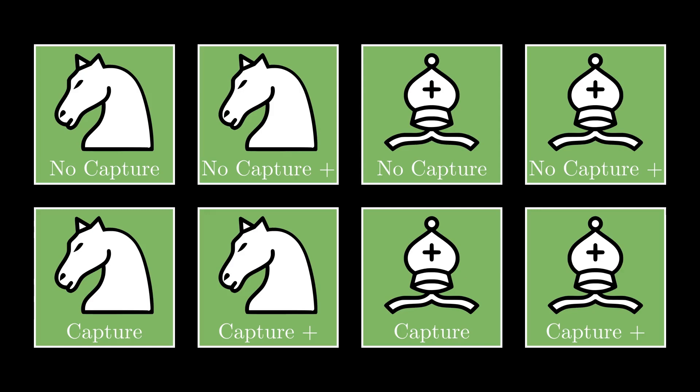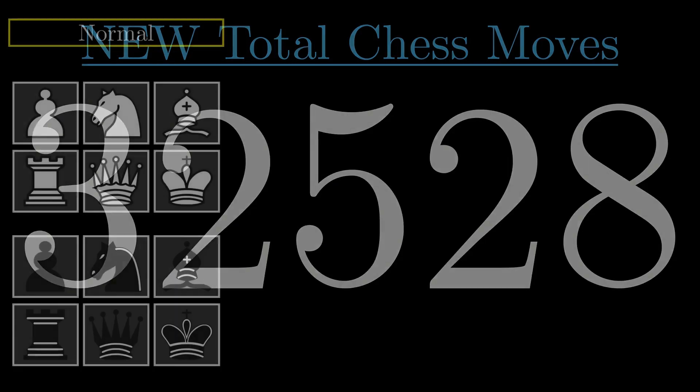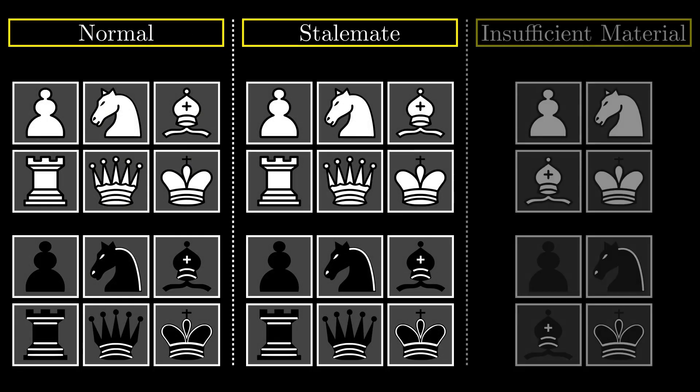Until you tell me of another category I've missed, I currently claim the number of potential moves in the game of chess is now 32,528 for normal, stalemate, and insufficient material situations.